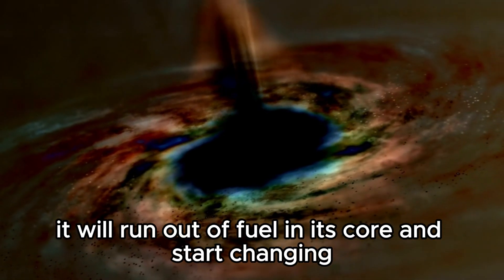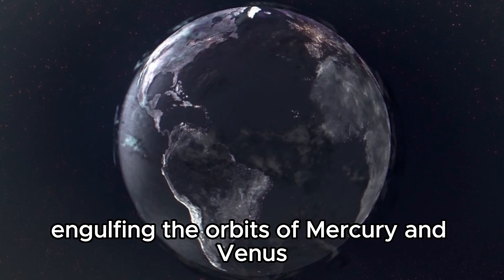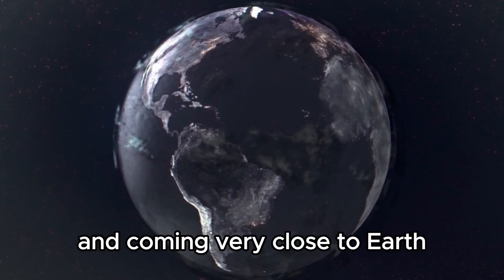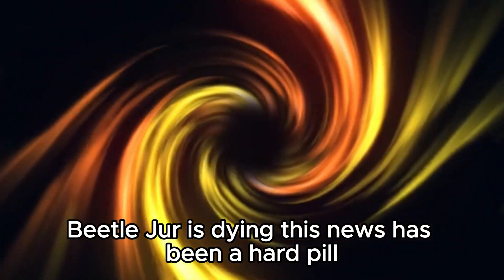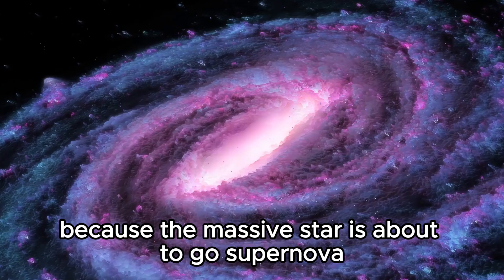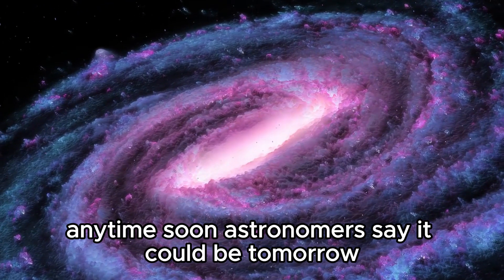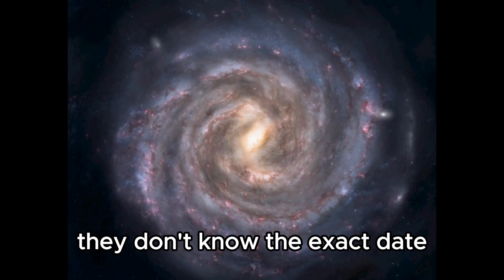Like any star, it will run out of fuel in its core and start changing. It begins bloating, engulfing the orbits of Mercury and Venus, and coming very close to Earth. Betelgeuse is dying. This news has been a hard pill for scientists to swallow, but there is nothing they can do about it because the massive star is about to go supernova anytime soon. Astronomers say it could be tomorrow, next month, or a few months from now. They don't know the exact date.